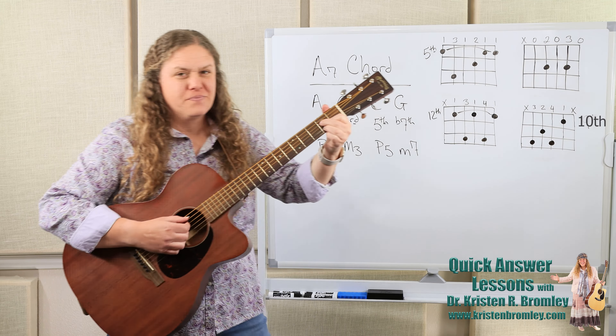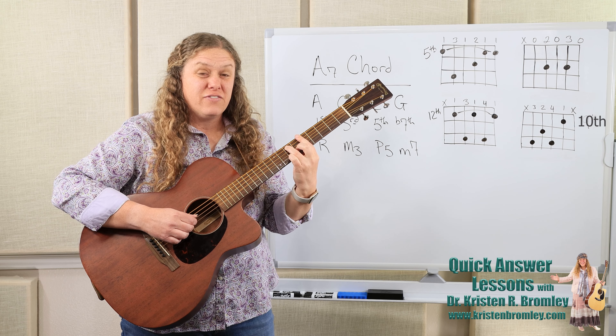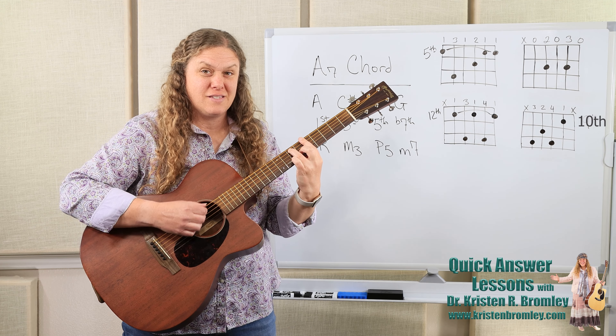Now we'll take a look at the bar chord versions. With the first one, we are barring at the fifth fret, and our index finger plays the first, second, fourth and sixth strings in that bar. Our middle finger goes at the sixth fret on the third string, and our ring finger goes at the seventh fret on the fifth string. The theory behind this voicing goes root, five, flat seven, three, five, root.